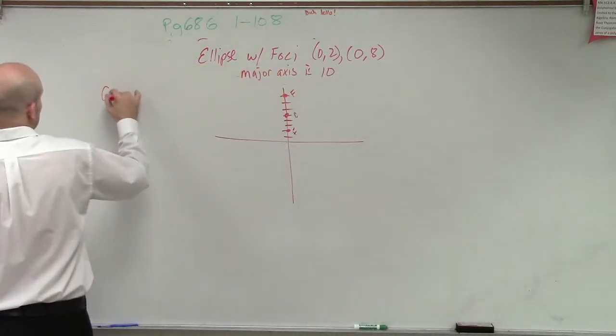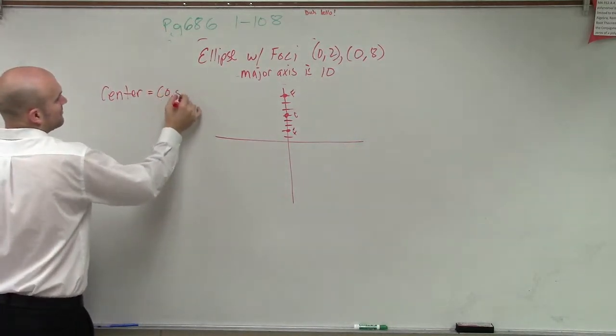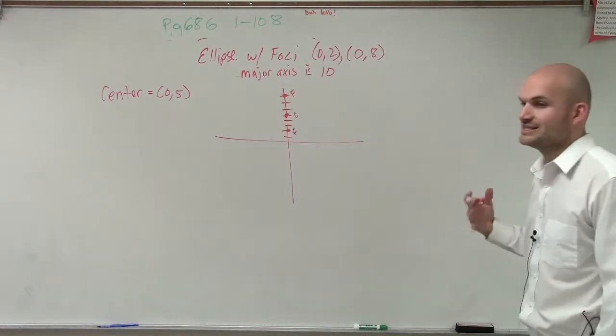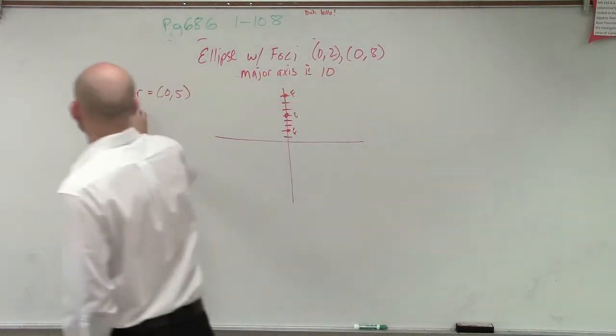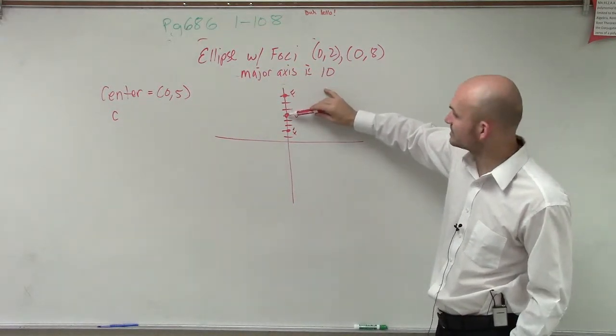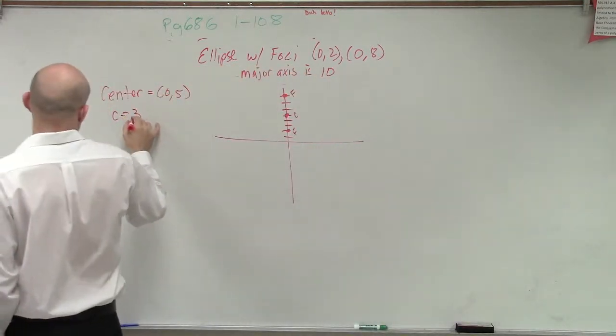So that's very helpful because now let's write them down. Our center is at 0, 5, and that's going to help us when writing the equation. That's your h and your k. Now, remember, what is the distance c? c is the distance from the center to the foci, which now we know where the center is. We can say this c is 1, 2, 3. So c equals 3.